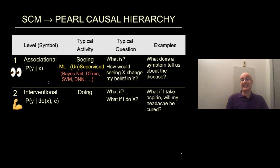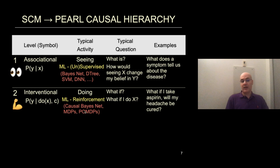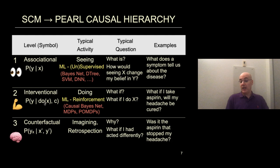Layer two is qualitatively different — the interventional layer, related to the activity of doing. What if I do X? What if I take the aspirin? Will my headache be cured? The counterpart in machine learning is reinforcement learning — Bayesian networks, Markov decision processes, partially observable MDPs, and so on. Symbolically, this is written as P of Y given do X.